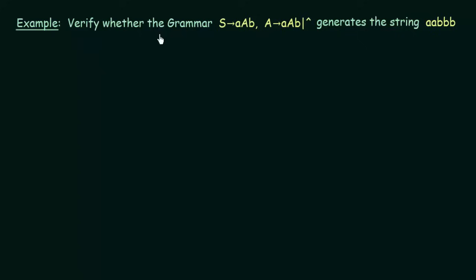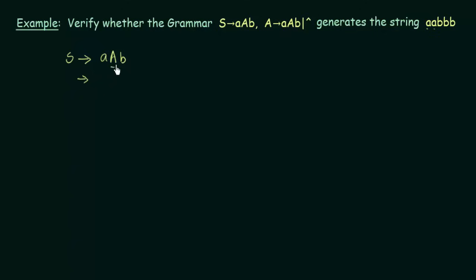Here we have another example. Verify whether the grammar — S gives aAB, A gives aAB and the empty string — generates the string aABBB. This is the same grammar used in the previous lecture. According to our rules, we start with the starting symbol S, and S gives aAB. Now I got the first 'a' and I need one more 'a'. The variable I have is A, and in order to get a small 'a' from capital A, I use the production A gives aAB, replacing A with aAB.